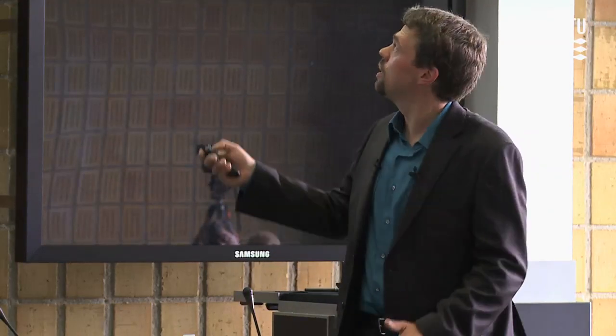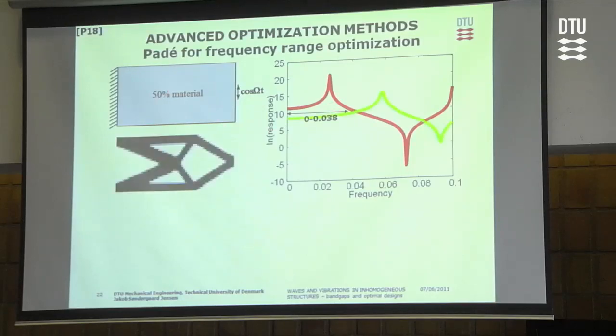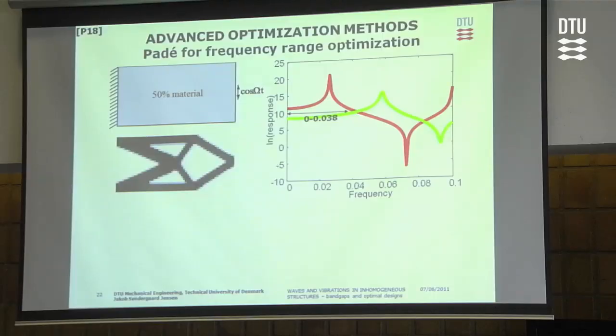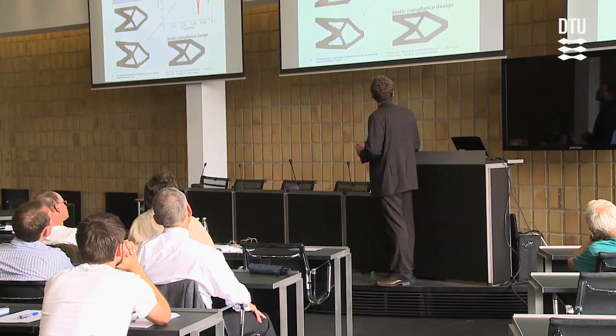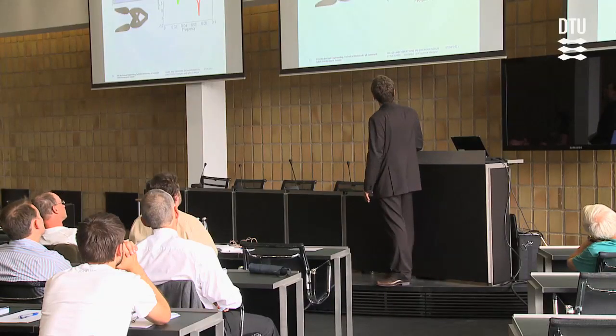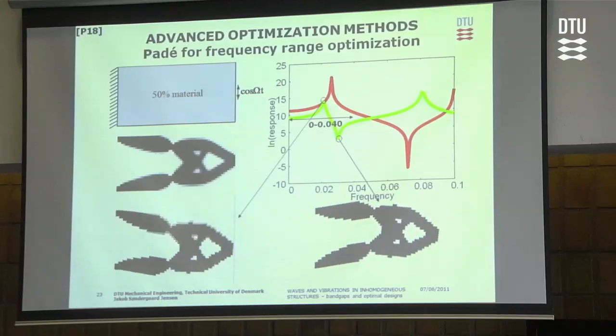On a sample problem, we minimize the response of a structure in the frequency range from 0 to 0.038, encompassing the first natural frequency of the initial structure. The optimized structure moves up the first resonance frequency to above the frequency range of interest. If we increase the frequency range a little, we get a qualitatively different design — accomplished by moving the first resonance frequency and the first anti-resonance frequency close together, thereby minimizing the frequency response in this range.